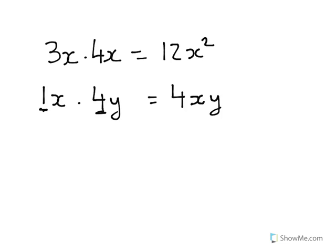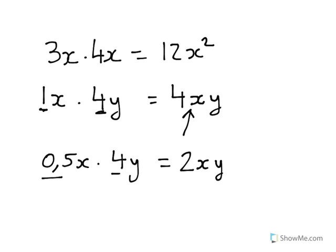And when we're multiplying, we're allowed to have different terms, and we just put them after one another with the first letter of the alphabet first. So if we have 1 half x multiplied by 4y, 1 half times 4 is 2. We do the numbers first. x times y is known as xy.